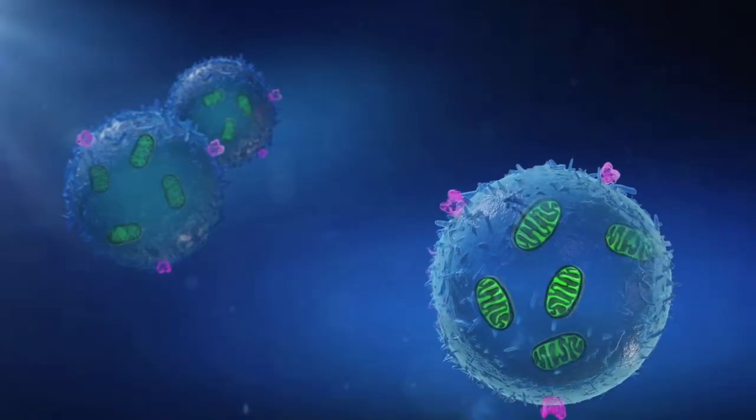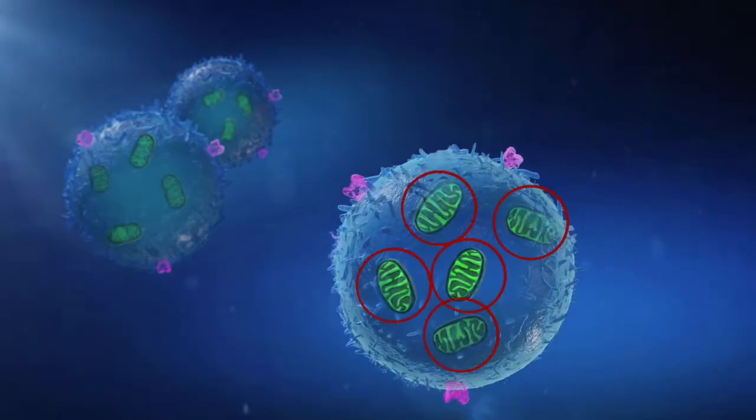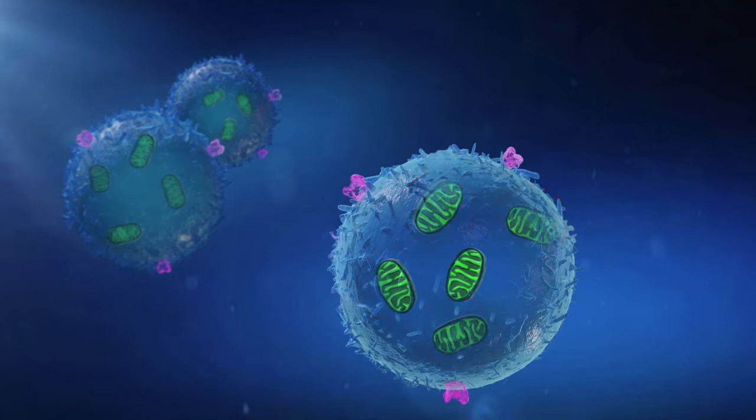Healthy T cells display mitochondria with a typical crystal structure, low intracellular levels of reactive oxygen species, and a limited surface expression of basigine.